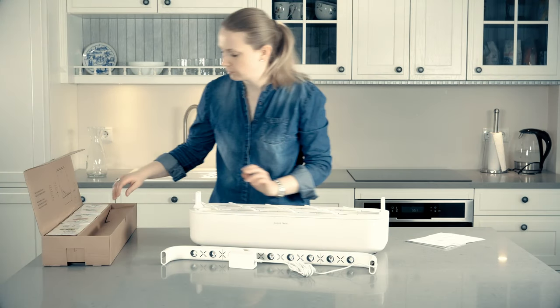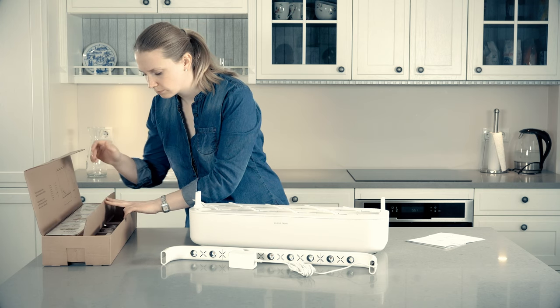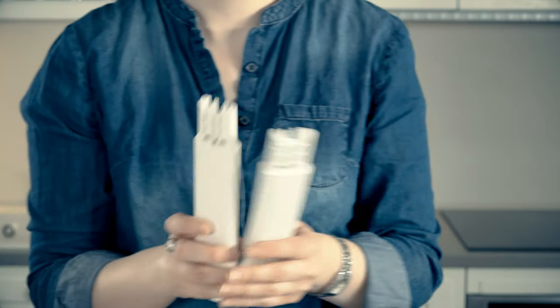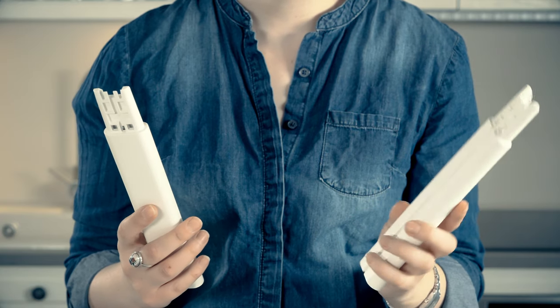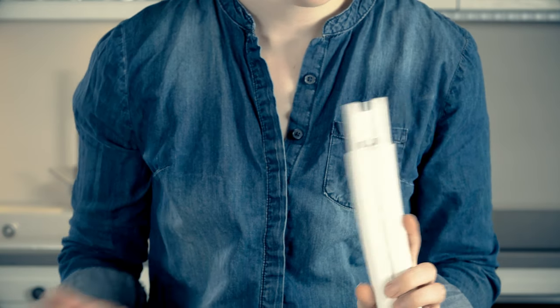Unbox the components and start with assembling the lamp by adding the provided lamp arm extensions. Notice that there are two types of extensions. One extension type has a narrow groove in it that fits the power cord later on.